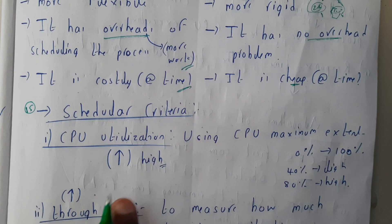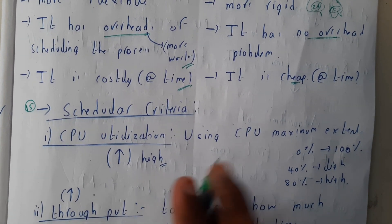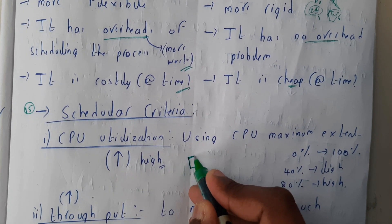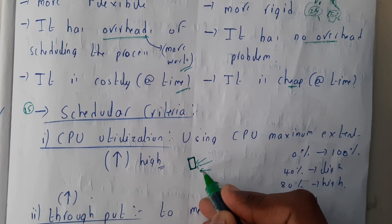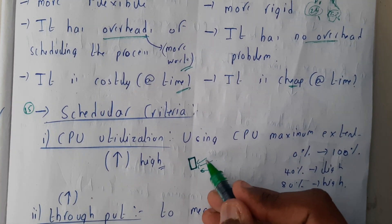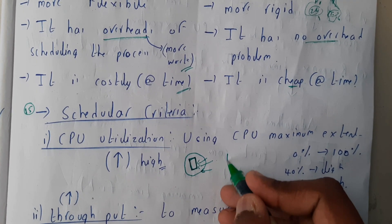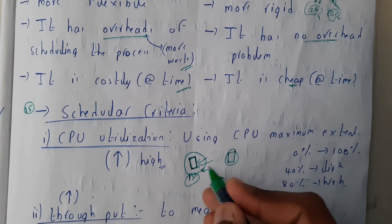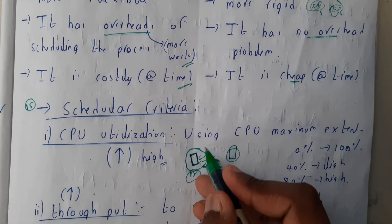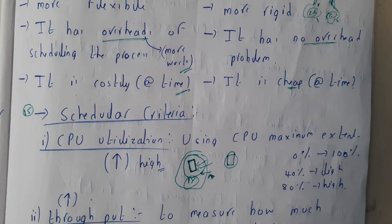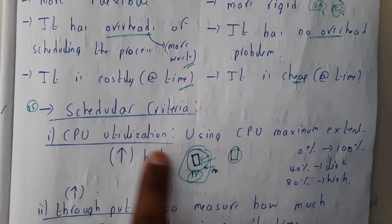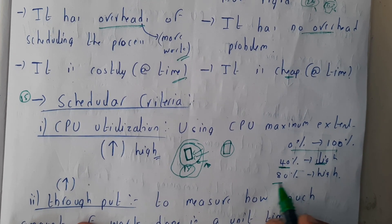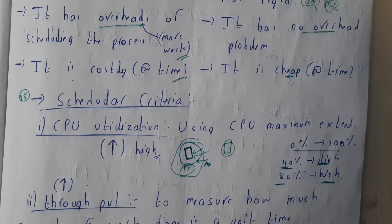The first criterion is CPU utilization. To explain this, let's take a small example. When you buy a mobile phone, you want to utilize it to the maximum — playing games, using WhatsApp, and many other things. Similarly, CPU utilization means using the CPU to the maximum extent. On a scale of 0 to 100, 40% is considered light usage and 80% is considered high usage.